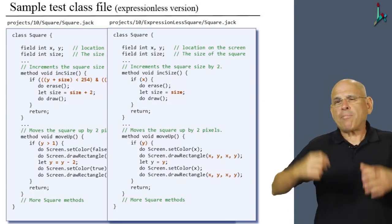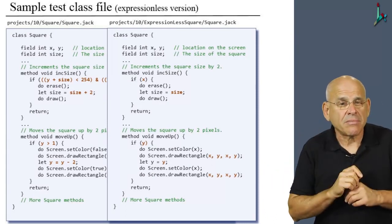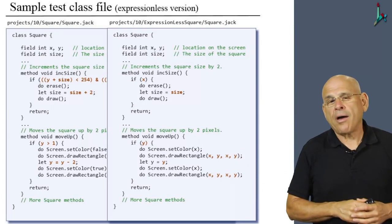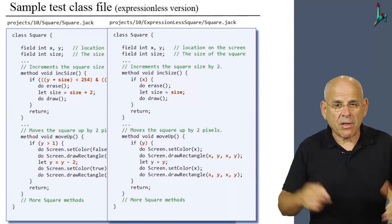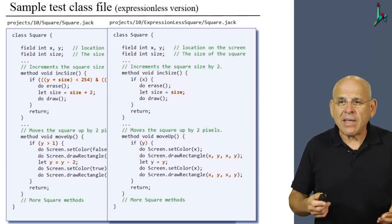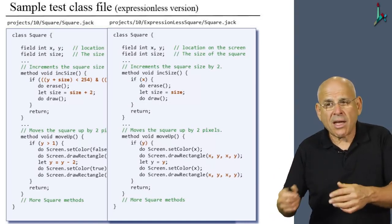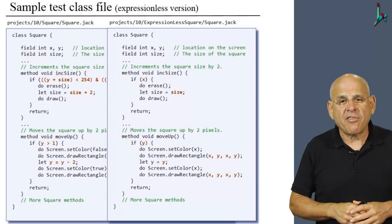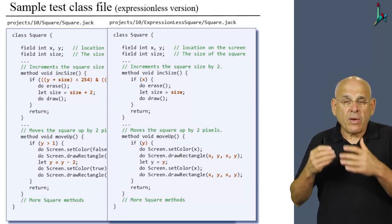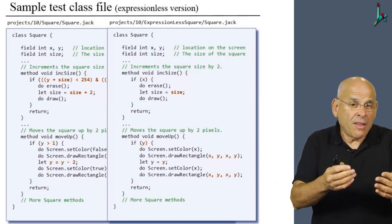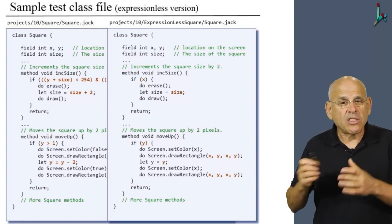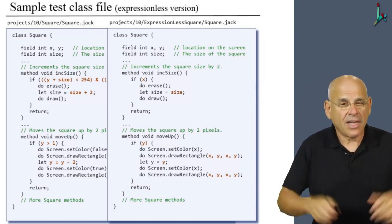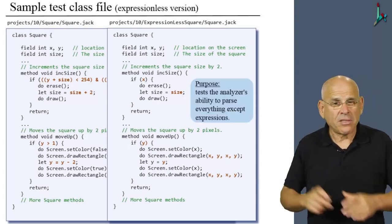In this version, we have substituted every expression with a variable name which is in the scope of this method. So for example, instead of saying y plus size less than 254, we simply say x. Now, x makes sense because x happens to be a field in this class, and therefore it is globally recognizable by all the methods. It's in the scope of all the methods. Likewise, instead of saying size equals size plus two, which is a complex expression, we replace it with size equals size. So this is our job to create these files. The result is a file which is simpler than the original one, because it has no complex expressions.